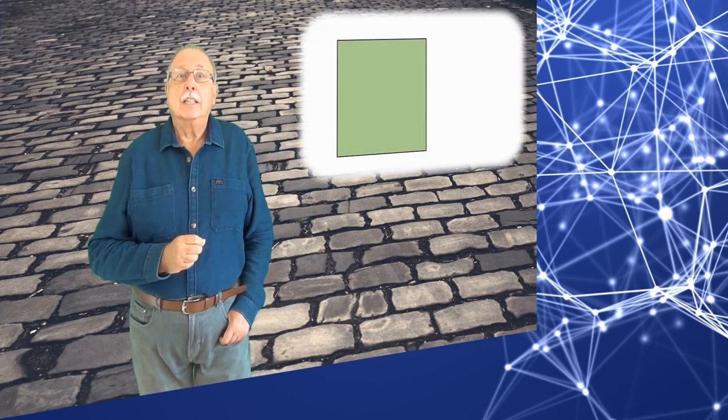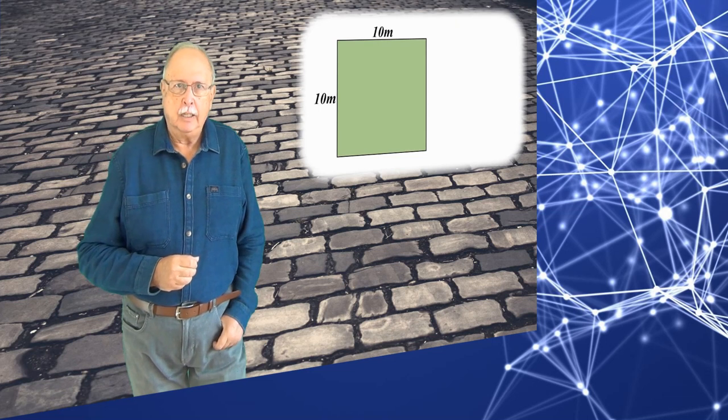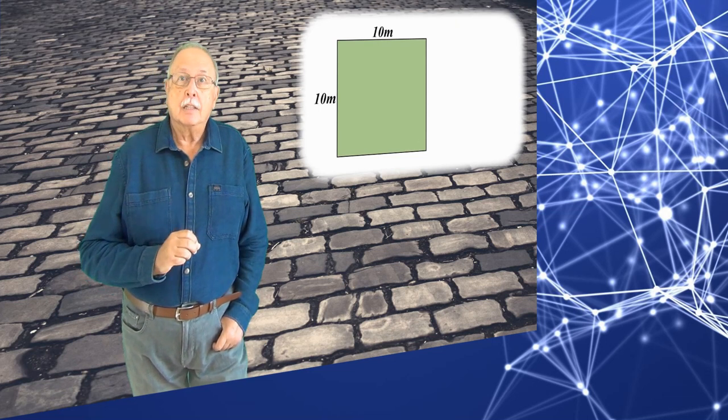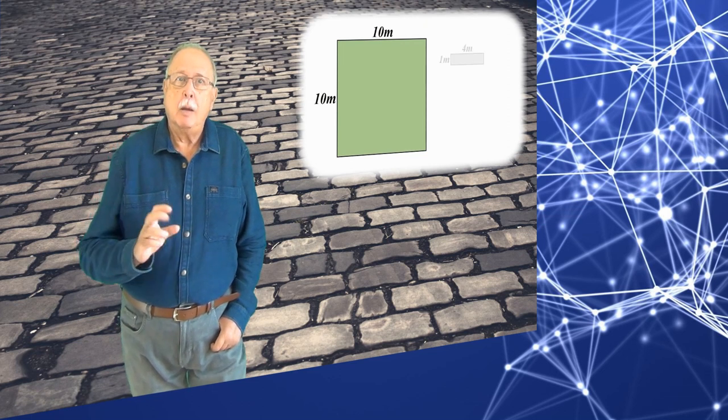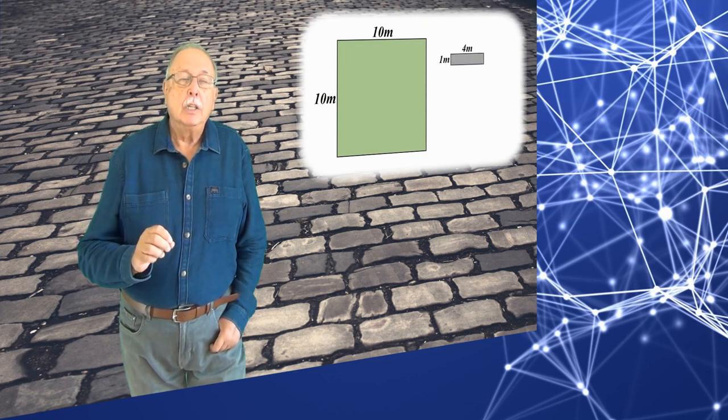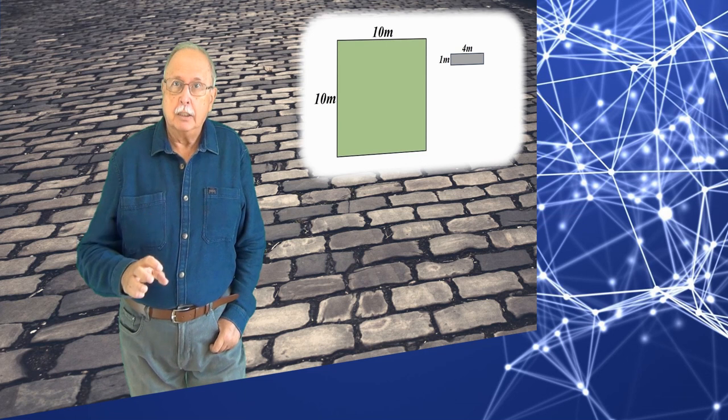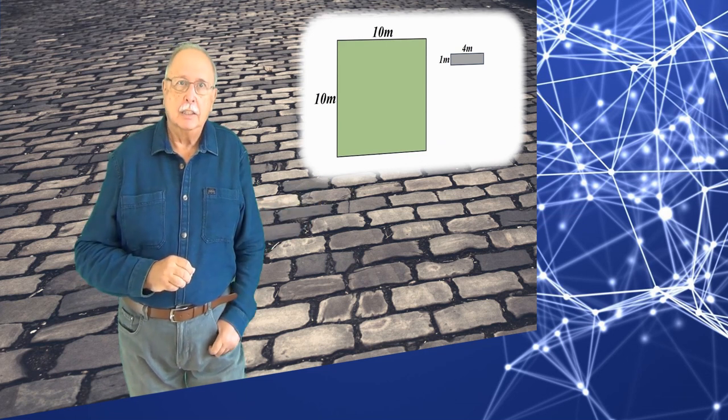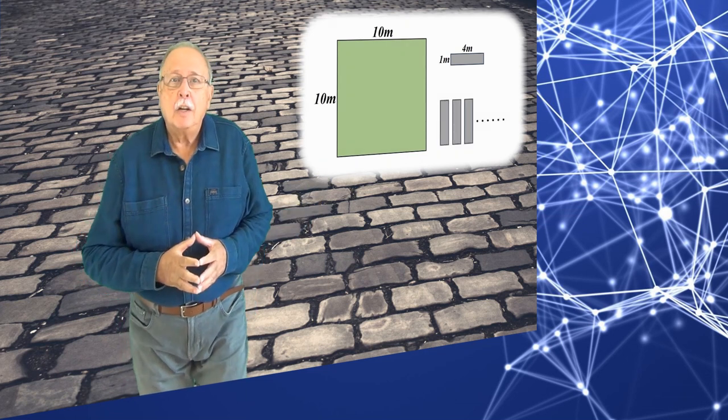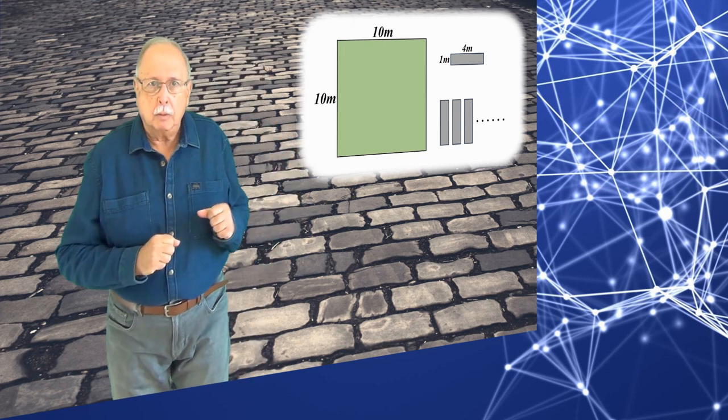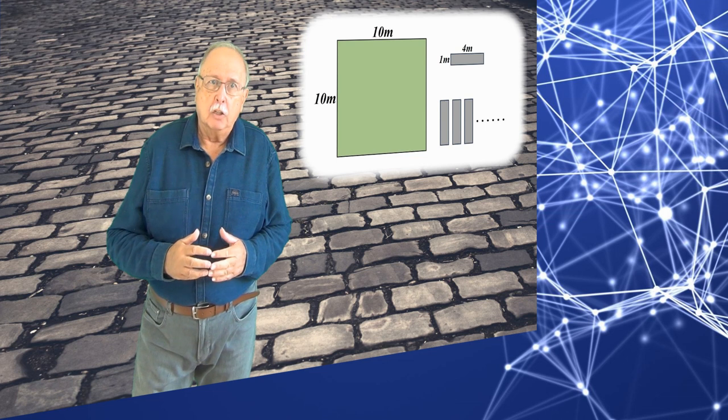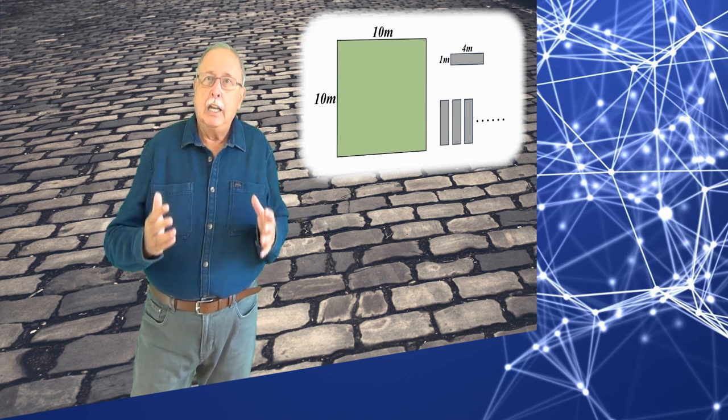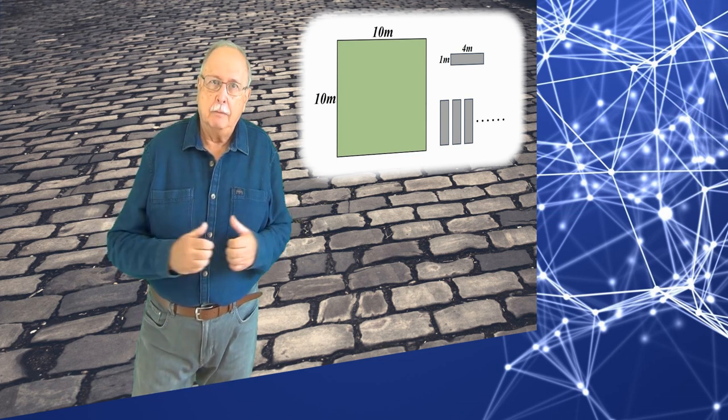Presupuneți că aveți o suprafață de teren pătrată cu latura de 10 metri. Această suprafață trebuie pavată folosind plăci de beton care au dimensiunile 4 pe 1 metri. Vedeți în desen. Presupuneți că avem voie să punem plăcile orientate cum dorim. Singura regulă este aceea că marginile plăcilor trebuie să fie paralele cu laturile suprafeței.